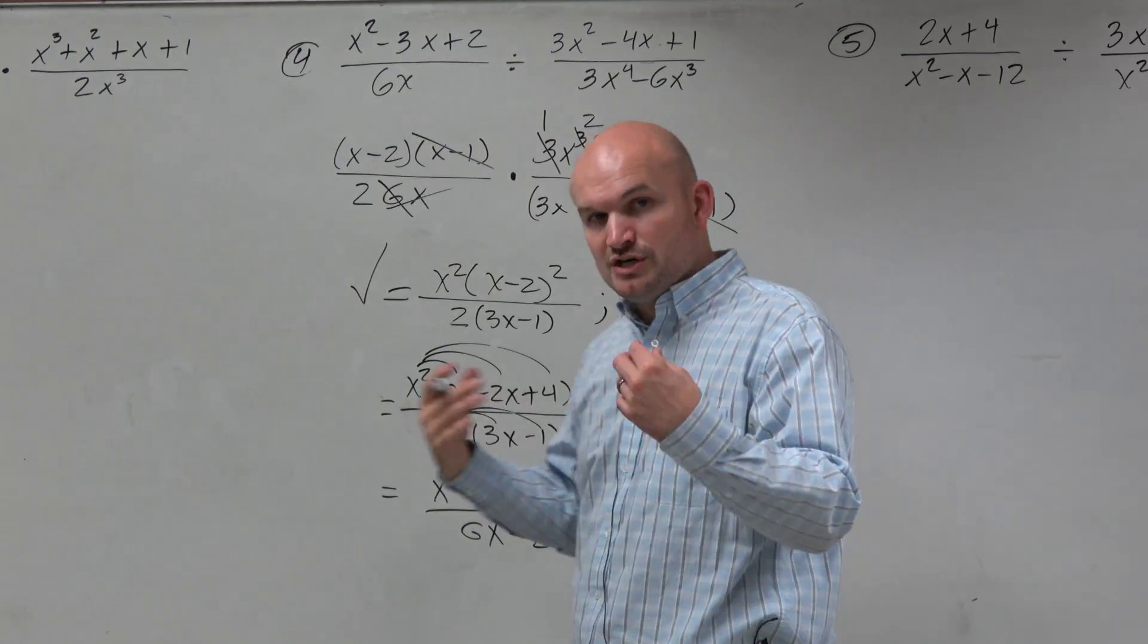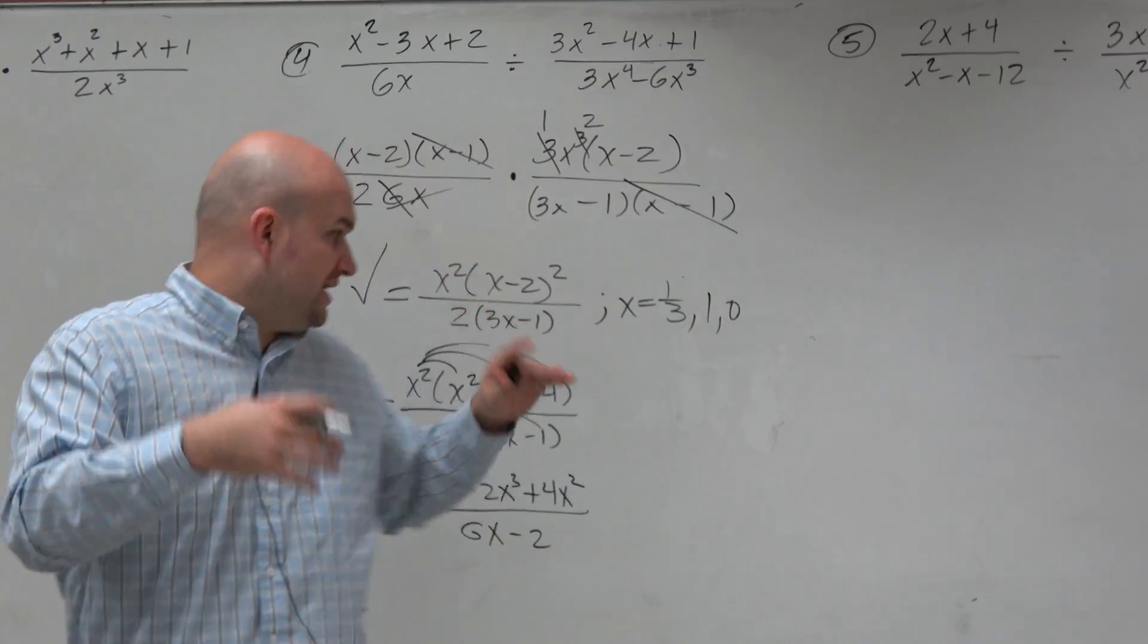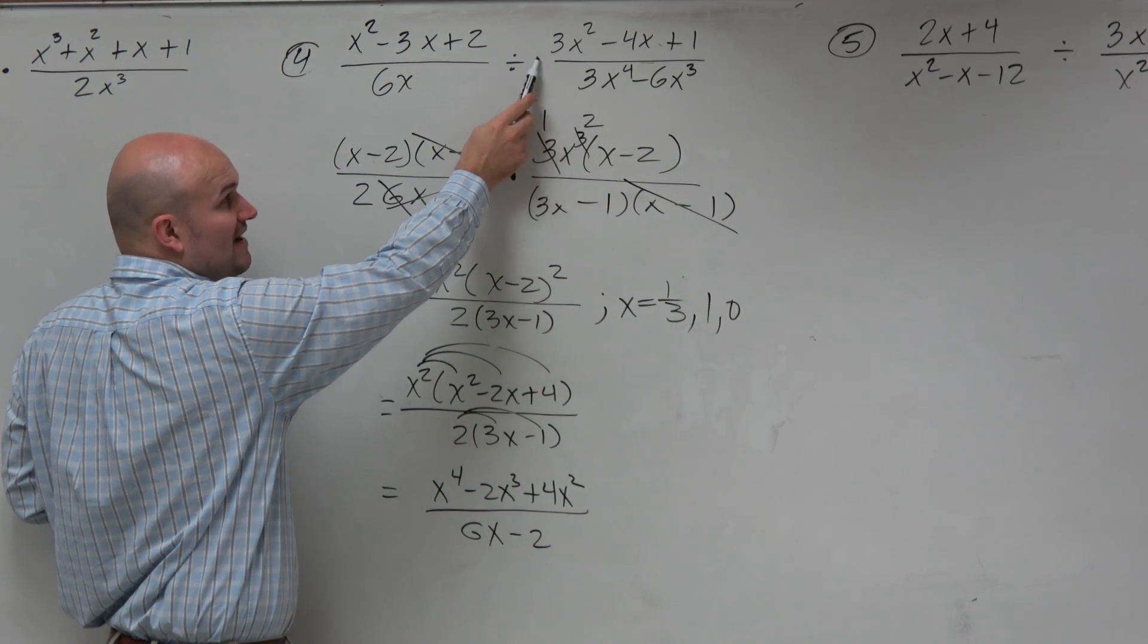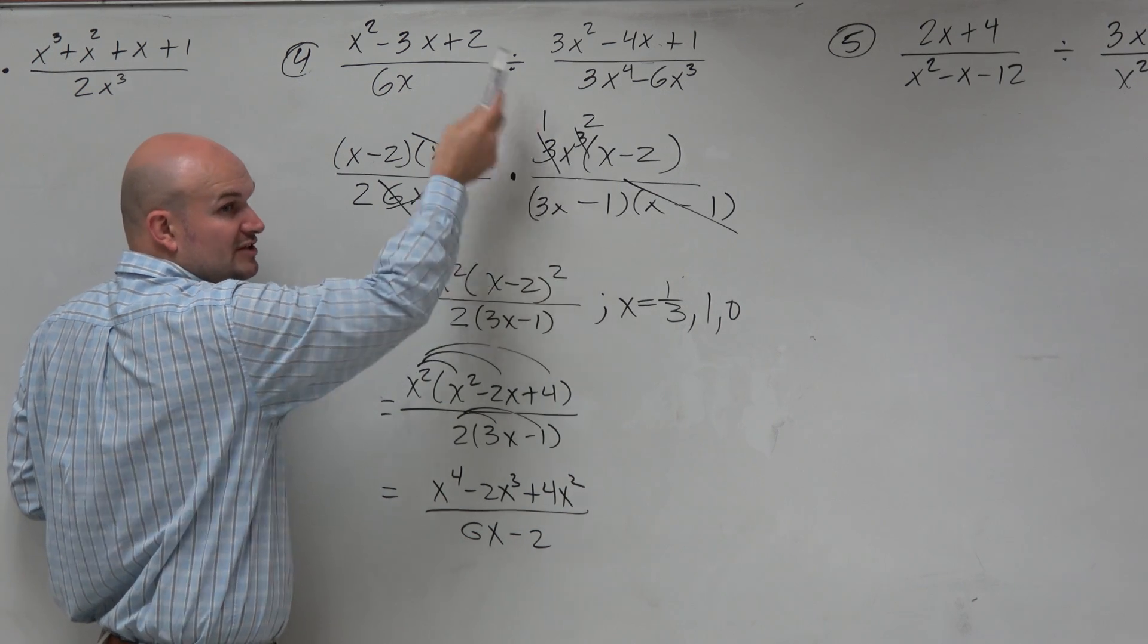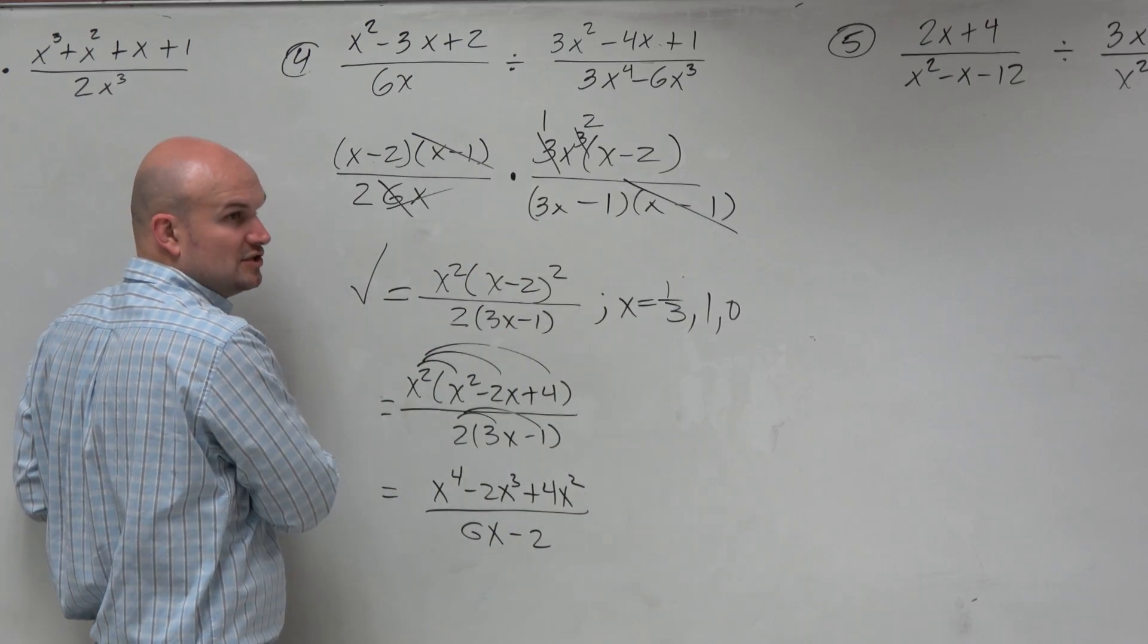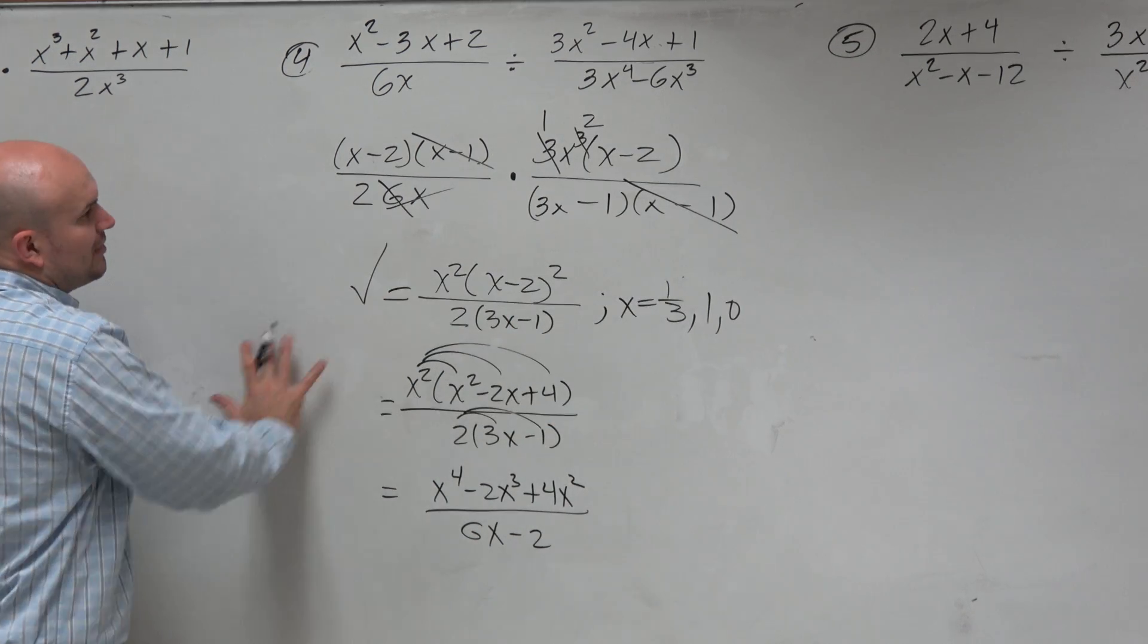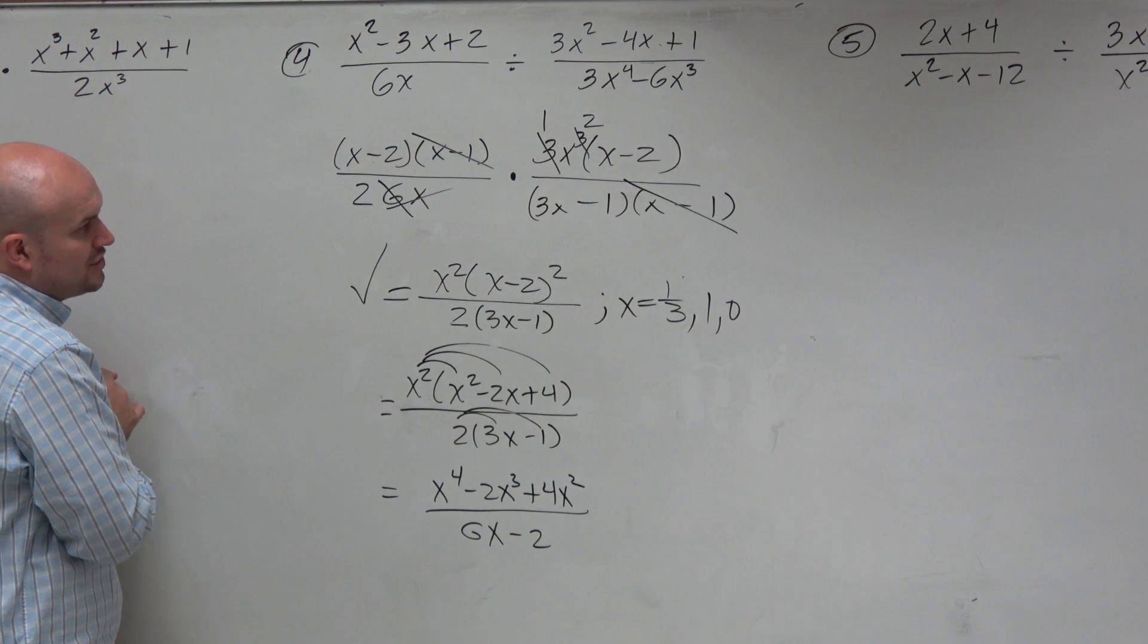And then also, even though this got divided out, if you look back to my original problem, what else can x not equal? 0. 0. So it's very important. When you're understanding these domain restrictions, don't be zeroed in on just the final answer. Right? Make sure you look at this. And again, don't be tricked because isn't dividing the same thing as multiplying by the reciprocal? Yep. Right? So when you're dividing, which is the same thing as multiplying by the reciprocal, that's what we want to look at for our domain restrictions.